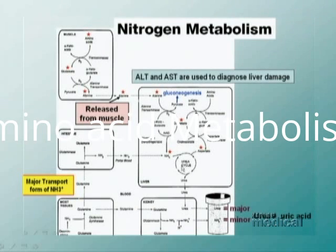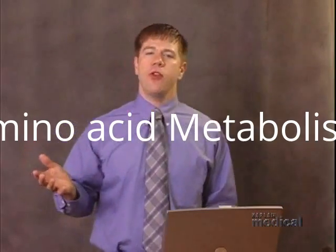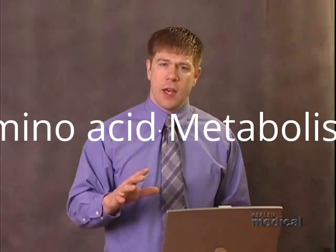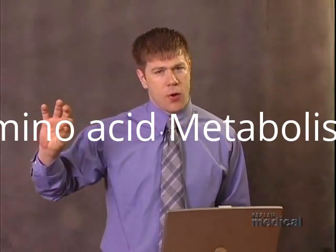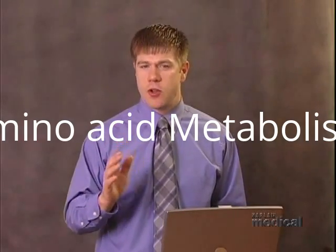The urea cycle produces urea from the amino groups coming in as ammonia and aspartate. Urea is generated mostly in the liver, collected in the kidney, and excreted in the urine — that's the major route of nitrogen disposal.